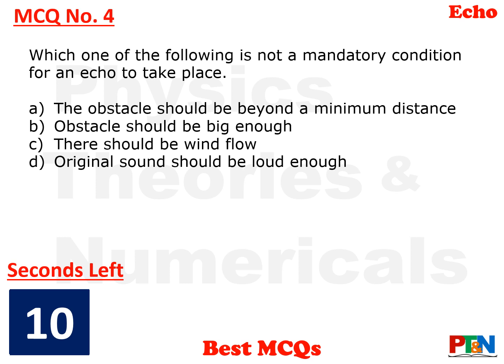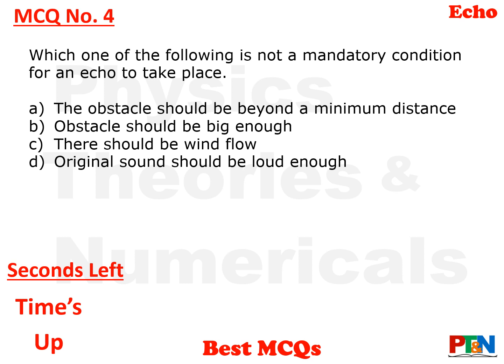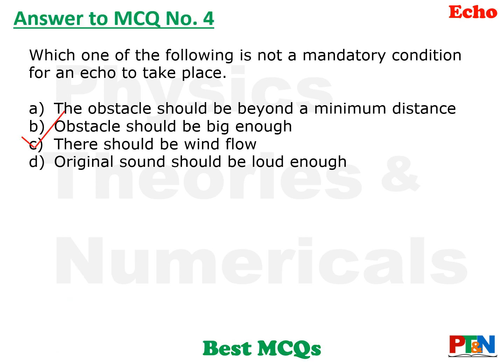Next MCQ: Which one of the following is NOT a mandatory condition for an echo to take place? The four options are: the obstacle should be beyond the minimum distance, the obstacle should be big enough, there should be good wind flow, and the original sound should be loud enough. The answer is Option C — there should be wind flow. That is not a required condition. Of course, atmosphere has to be there, but there need not be wind flow.